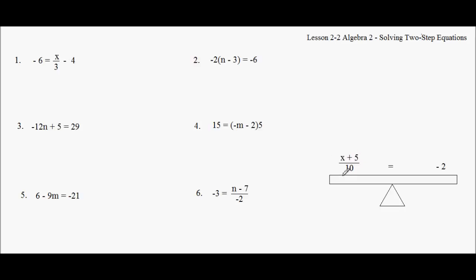Now, last time I said we go after the adding and subtracting first. But in this case, this is an exception to the rule. We consider this top part like it's by itself — it has a parenthesis around it, and I can't get at it until I get rid of this denominator. It's like a castle with a moat. So I've got to get rid of it, and this is a divide-by, so you have to multiply. I'm going to multiply both sides by 10.